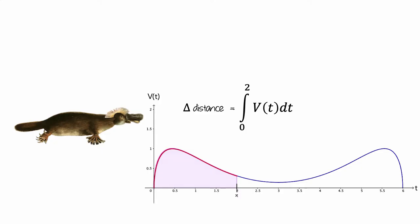Next, let's increase the value of x from 2 to 4. This would change the upper bound of the definite integral to 4, because we'd now be considering the first 4 seconds of the platypus's motion.